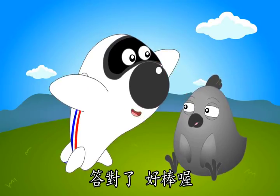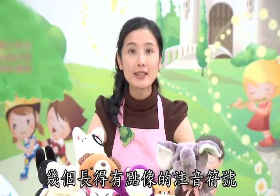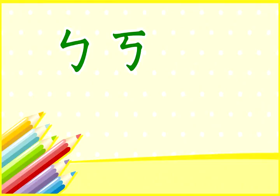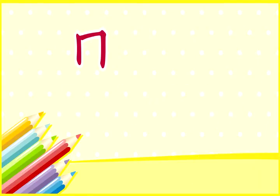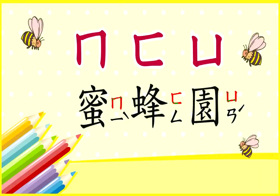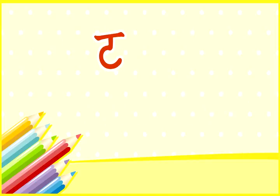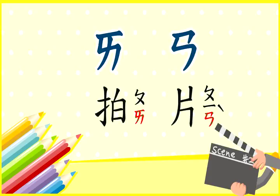答对了，好棒哦！哇，小灰果然一学就会。小朋友，那你们呢？我们再来练习几个长得有点像的注音符号，你们要注意看哦：ㄜ、ㄎ、ㄉ、ㄌ；ㄇ、ㄈ、ㄩ；ㄍ、ㄑ；ㄛ、ㄜ；ㄚ、ㄏ；ㄧ、ㄢ；ㄣ、ㄥ。